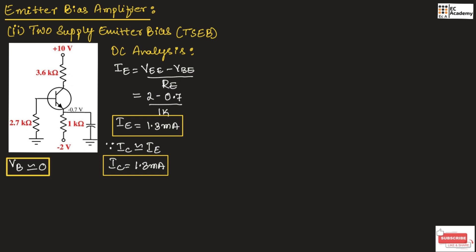Also, the voltage VC can be written as VCC minus IC times RC. If we substitute the values here, VCC is 10V minus IC is 1.3 milliampere and RC is 3.6 kiloohm. Therefore, VC equals 5.32 volts.